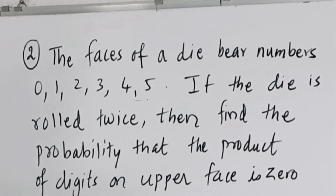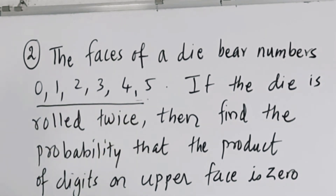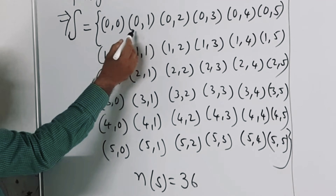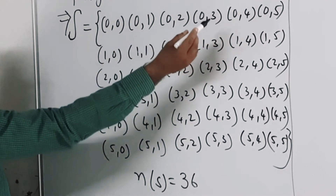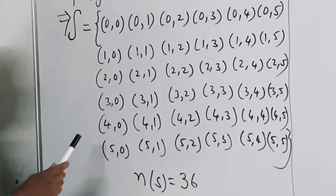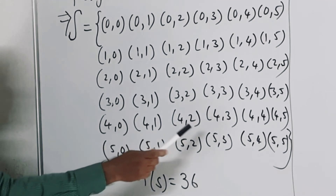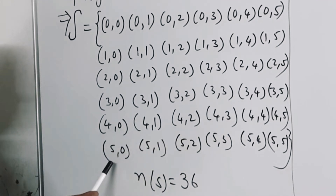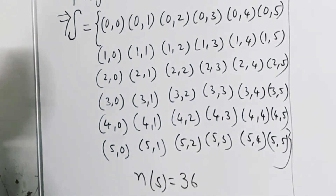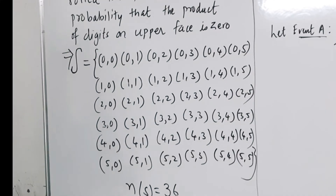The sample space consists of all ordered pairs when two dice with faces 0–5 are rolled. The outcomes are: (0,0), (0,1), (0,2), (0,3), (0,4), (0,5); (1,0), (1,1), (1,2), (1,3), (1,4), (1,5); (2,0), (2,1), (2,2), (2,3), (2,4), (2,5); (3,0), (3,1), (3,2), (3,3), (3,4), (3,5); (4,0), (4,1), (4,2), (4,3), (4,4), (4,5); (5,0), (5,1), (5,2), (5,3), (5,4), (5,5). These are the outcomes when two dice are rolled with faces 0, 1, 2, 3, 4, 5.